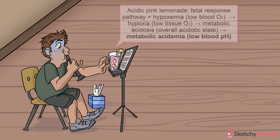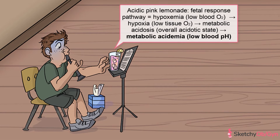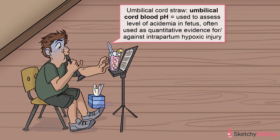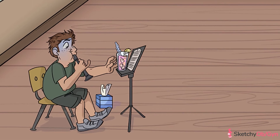If the fetus is in a hypoxic state, this often causes a metabolic acidosis, which is eventually reflected by metabolic acidemia, or low blood pH, symbolized by acidic pink lemonade. The exact blood pH is a very important number to know, as it shows you exactly how acidemic the fetus was right before delivery. You get the blood pH from the umbilical artery, symbolized by an umbilical cord straw coming out of the acidic pink lemonade.